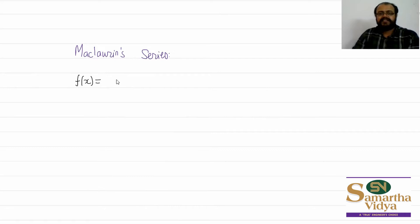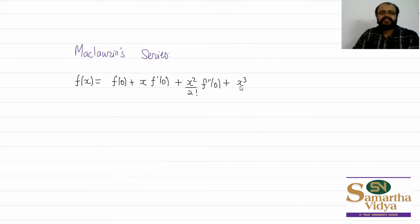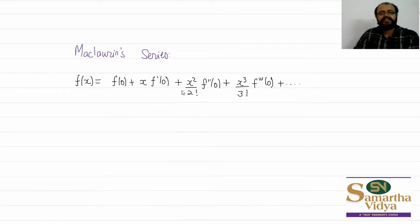The Maclaurin series states that if we need to represent a function in terms of increasing powers of x — that is, as a polynomial function — then it is represented as f(0) plus x·f'(0) plus x²/2! · f''(0) plus x³/3! · f'''(0), and so on, with increasing degrees of x divided by the corresponding degree factorial.